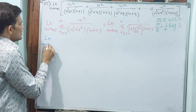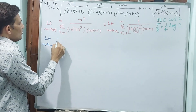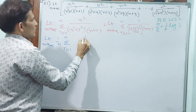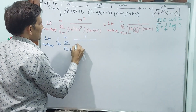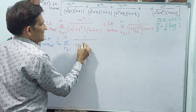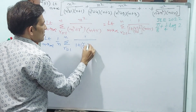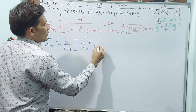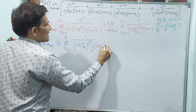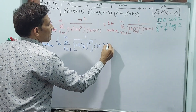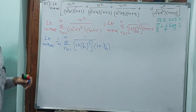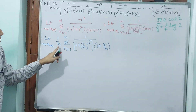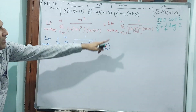Limit n tends to infinity, 1 by n, sigma r equals 1 to n, 1 by (1 plus r by n) whole squared, into (1 plus r by n). I have taken n common — automatically 1 plus r by n is going to come, and n came here.